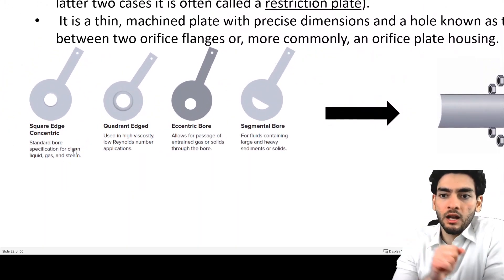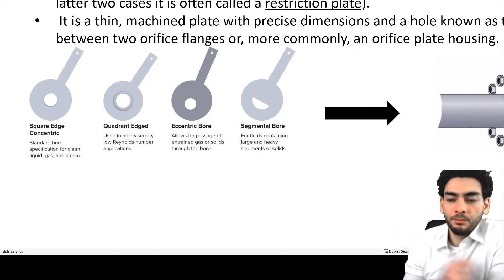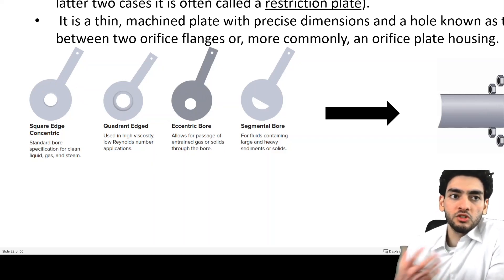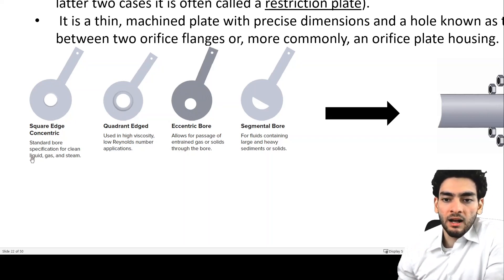You can see here in the picture there are multiple types of orifice plates. The main and common type is the square edge concentric type, which is standard and used for clean liquid, gas, and steam. However, you have different other types.